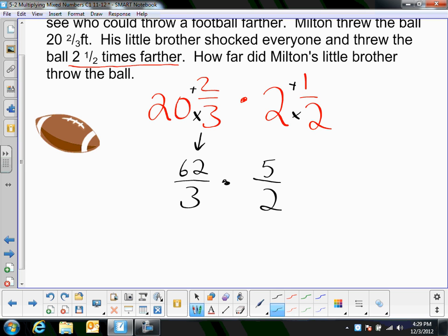And, I have 5 halves. Now, 3 and 5 can't be reduced. But, 2 and 62 are both even numbers. So, I'm going to cut those in half. 2 divided by 2 is 1. And, 62 divided by 2, that's easy. That's 31. And, now, I'm just going to multiply it straight across. 31 times 5. Now, I don't know what that is offhand. So, I'm going to do it off to the side. 31 times 5 is 5 times 1 is 5. 5 times 3 is 15. So, that's 155. Over 3 times 1, which is 3.